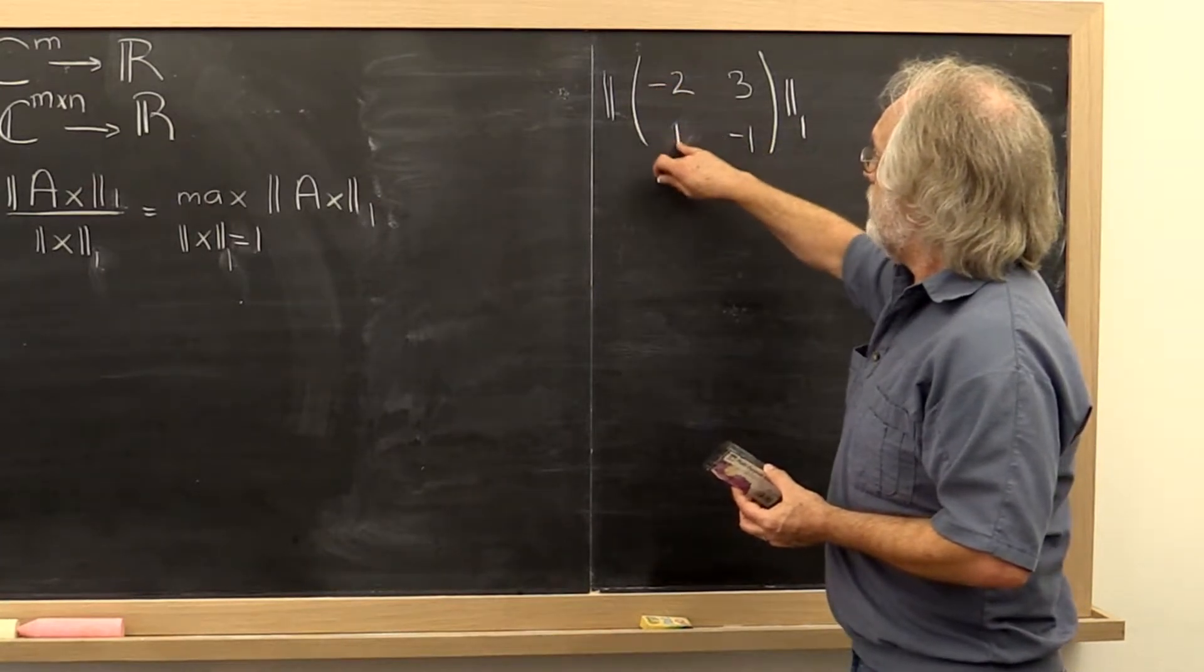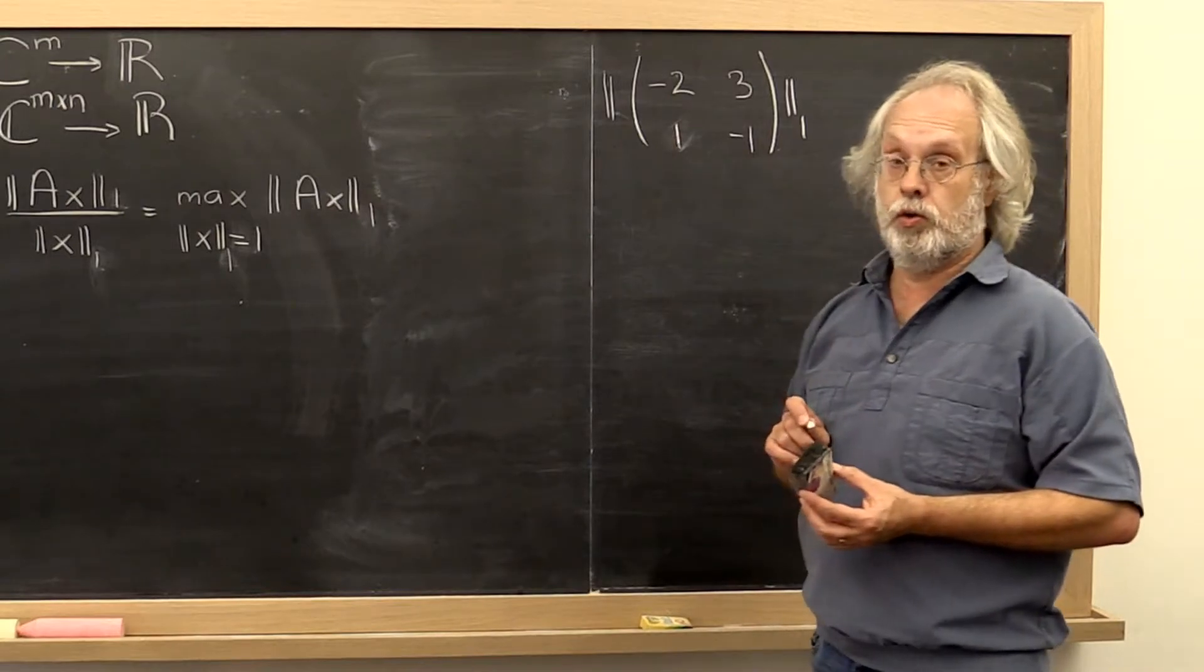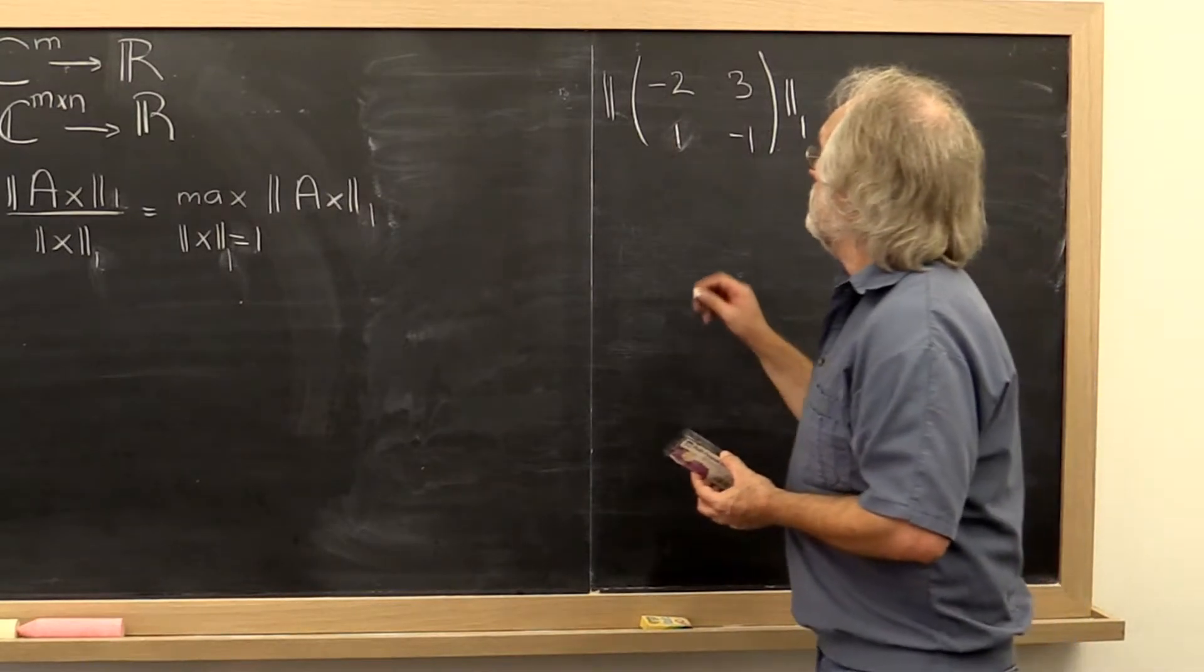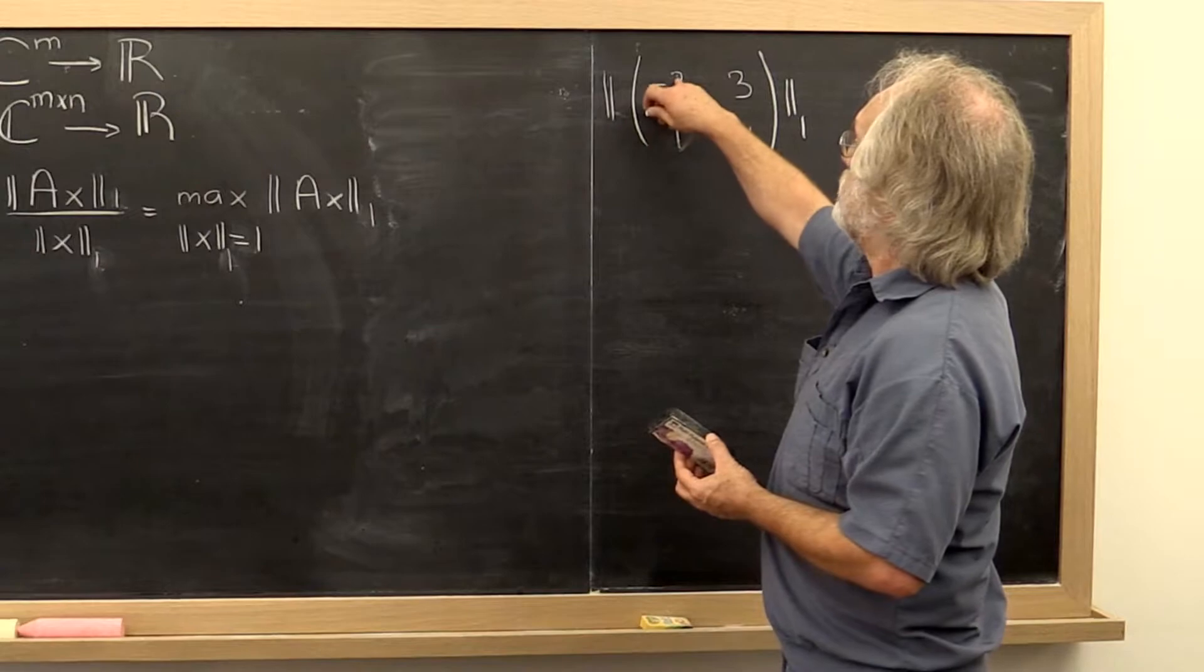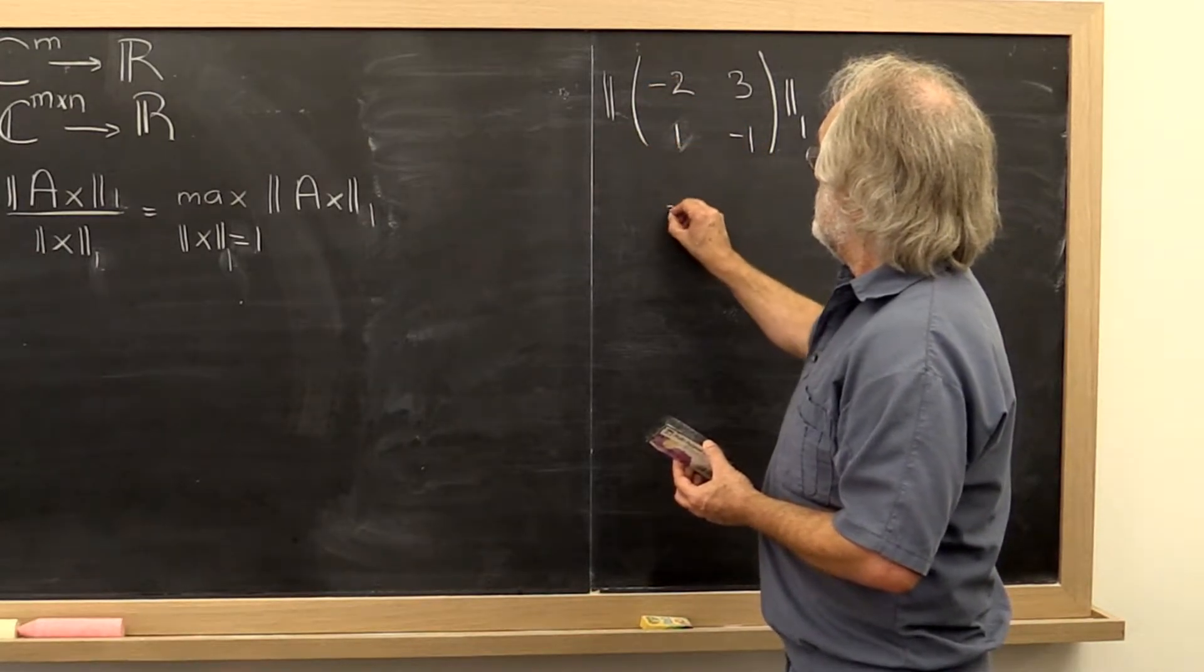You compute the vector 1 norm of the first column. What is that? Absolute value of 2 plus absolute value of 1 is 3.